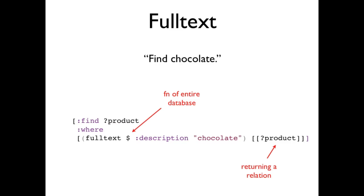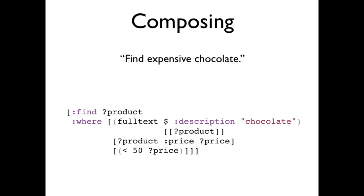As a final function example, consider full text. Datomic distributes and integrates Lucene, which you can access via the full text function. So you can say, find me all products with the word chocolate in their description that cost more than $50.